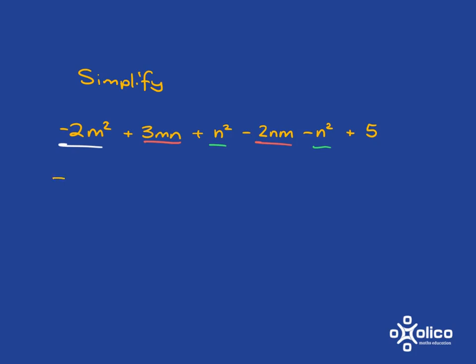So now we go through and sort it out. This negative 2m squared doesn't have a partner, so it just stays. Then we deal with the 3mn subtract 2mn, and we will get there 3 minus 2 is 1, one lot of mn, which we just write as mn.